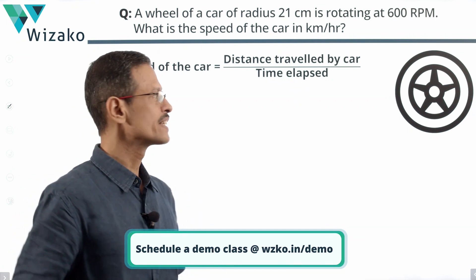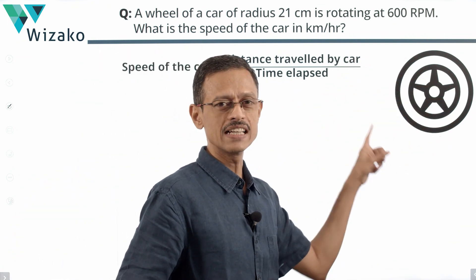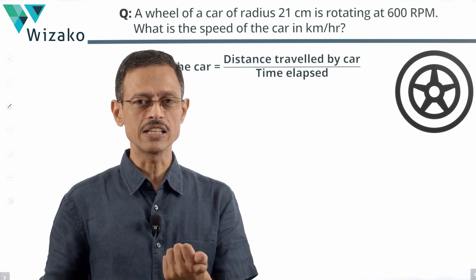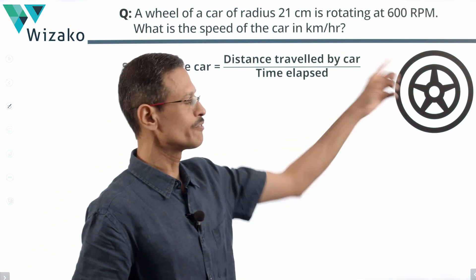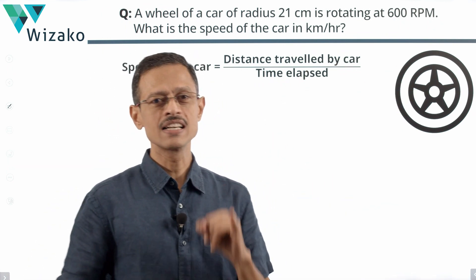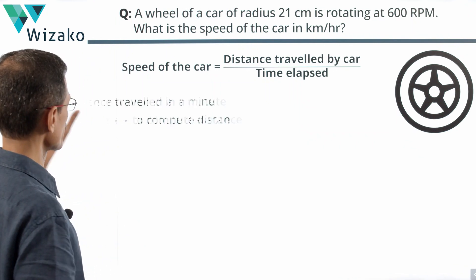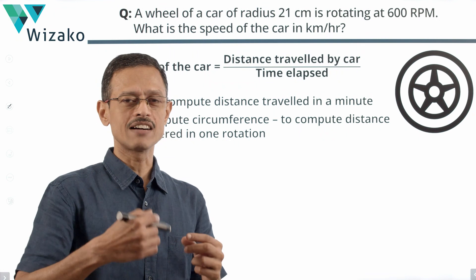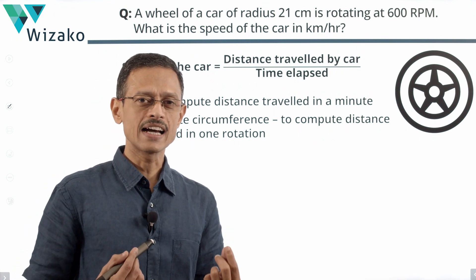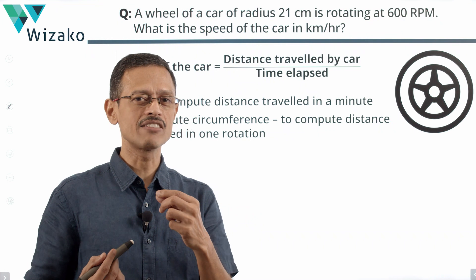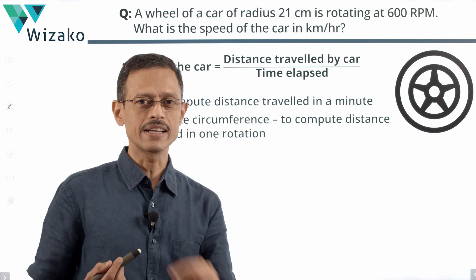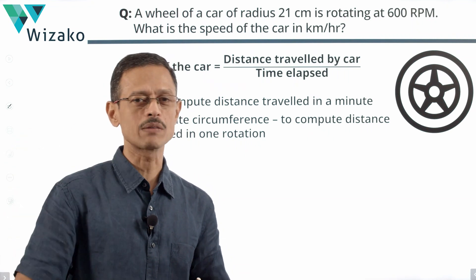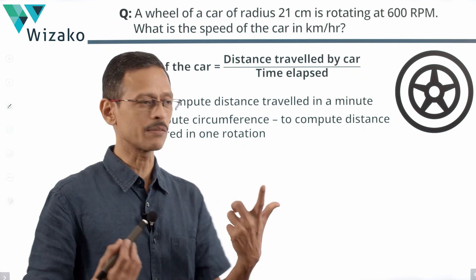In the first step, I'm going to find out the distance that this wheel covers when it is making one rotation. In one rotation, the distance traveled by this wheel is nothing but the circumference of this wheel. So the circumference of the wheel gives us the distance traveled in one rotation. Then I'll find out the distance covered in one minute: distance covered in one rotation multiplied by the number of rotations done per minute, which is the RPM.